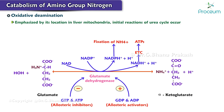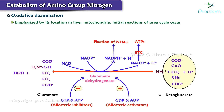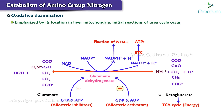Thus, lower cellular energy — high ADP and GDP — activates glutamate dehydrogenase to break down glutamate into alpha ketoglutarate, which can enter the TCA cycle to yield energy. Conversely, increased cellular energy — increased ATP and GTP — inhibits this enzyme.